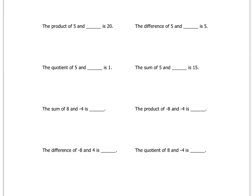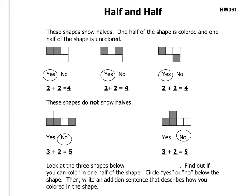Okay, on to the other side. Now on to the back side, we have half and half. These shapes show halves. One half of the shape is colored and one half of the shape is uncolored. So they're talking about these shapes up here.